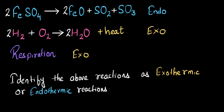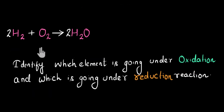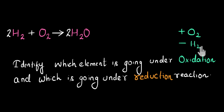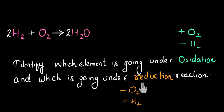Now let's do one last problem — we have to identify which element is going under oxidation and which is going under reduction. First, let's recall what we mean by oxidation and reduction. Oxidation means oxygen's addition: if oxygen is getting added to an element, or in terms of hydrogen, if hydrogen is getting removed from an element, then that element is going under oxidation. For reduction it's the opposite: if oxygen is removed from an element or hydrogen is getting added to an element, then that element is going under reduction.